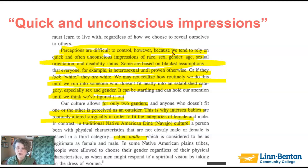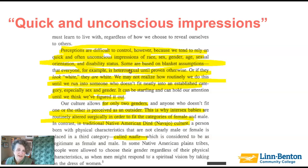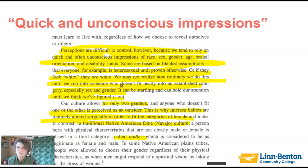Johnson talks about quick and unconscious impressions — you probably know this as implicit bias, as we've been talking about. These are based on assumptions; for example, to assume people are heterosexual or straight unless proven otherwise, or if they look white, they are white. We don't tend to question these assumptions unless we run into someone who doesn't fit neatly into a category that we have socially constructed in our head.